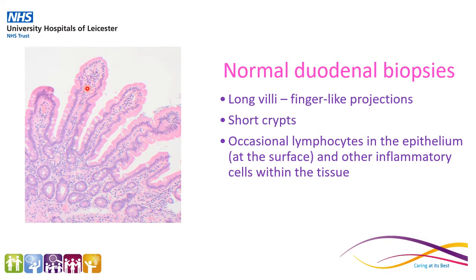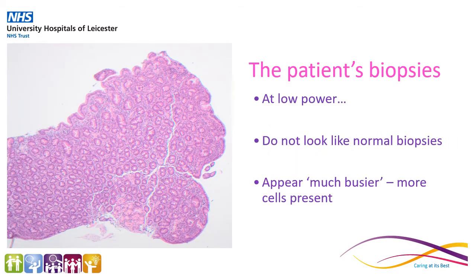And within the lamina propria, the underlying tissue, there are more lymphocytes and occasional inflammatory cells. Now these are a normal feature, but there shouldn't be too many of them.